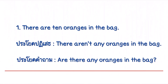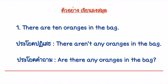ข้อที่ 1: There are 10 oranges in the bag ประโยคนี้แปลว่า มีส้ม 10 ผลอยู่ในถุง ถ้าแต่งเป็นประโยคปฏิเสธ นักเรียนก็เติม not เข้าไปข้างหลัง are จะได้เป็น There aren't any oranges in the bag แปลว่าไม่มีส้มอยู่ในถุงเลย และเปลี่ยนเป็นประโยคคำถามได้ง่ายๆ เพียงแค่นำ Are มาสลับกับ There แค่นั้นเองค่ะ แล้วเติมเครื่องหมาย Question Mark ไปท้ายประโยคค่ะ